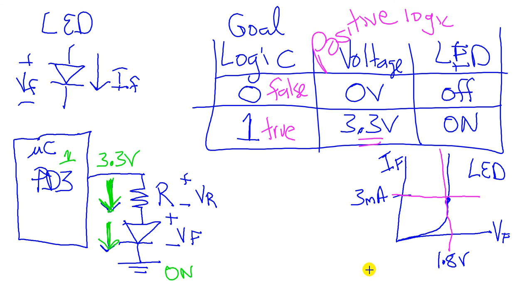It turns out the brightness is a function of power. So in this case, V times I, which is 1.8 volts times 3 milliamps. That's how bright it's going to be. So how do we get this to happen?